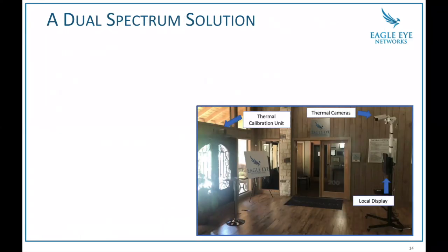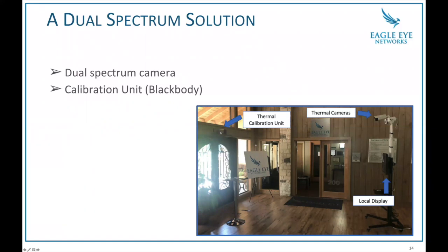This is our lobby in Austin, Texas. We've set up a dual spectrum camera system — actually two cameras mounted on a rolling cart that allowed us to move it around as needed. The ceiling in our facility is pretty high, so mounting cameras to the ceiling properly would be difficult, which is another reason the cart works well. We have the dual spectrum camera, the calibration unit or black body sitting above the door emitting heat, and our bridge sitting on a little shelf — the whole unit is on wheels so it can be moved as needed.